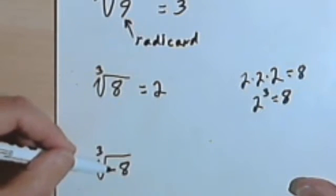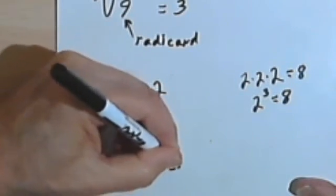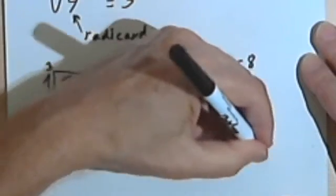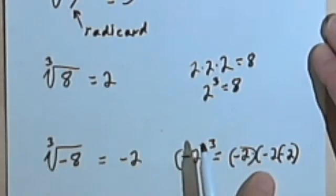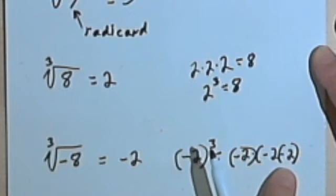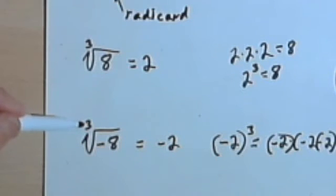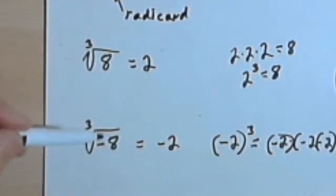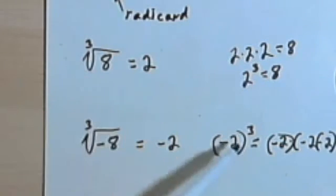Is there a number that we can raise to the third power to get a negative 8? Well, yes there is. That number is negative 2. Because negative 2 to the third power, that's negative 2 times negative 2 times negative 2. Negative 2 times negative 2 is positive 4, and positive 4 times negative 2 is negative 8. So when you see a negative sign, but the index is 3, then you're going to have a negative answer, which is perfectly okay, and it's going to be the third root of whatever you have under the radicand, or the number that you can cube to get to the radicand.